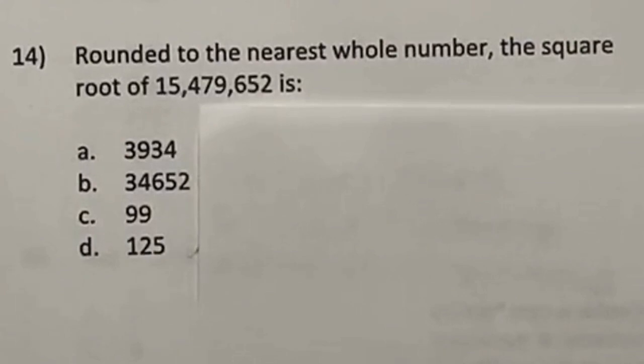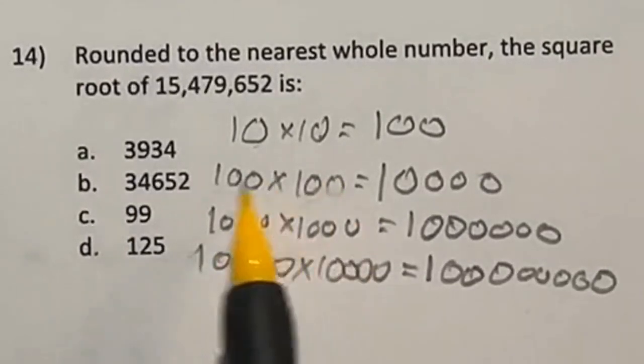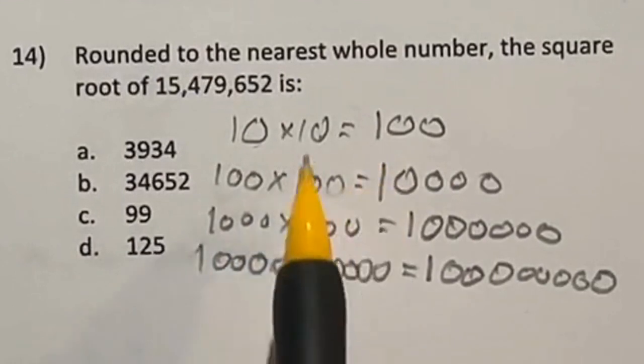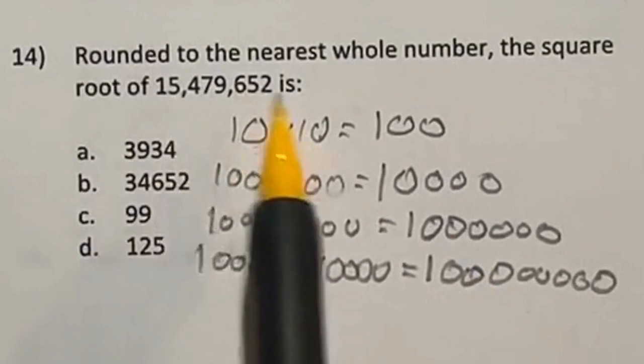I'm going to consider these numbers that I have written right here. Notice I squared 10, I squared 100, I squared 1,000, and I squared 10,000. Now, these are really easy to do because you just put a 1, and then you count the number of zeros total afterwards. Now, looking at these, my answer right here, 15 million, is going to have a total of 8 digits here.